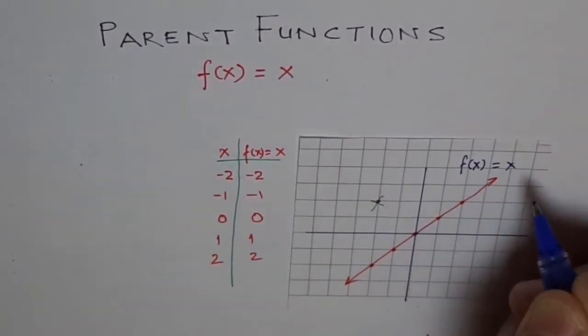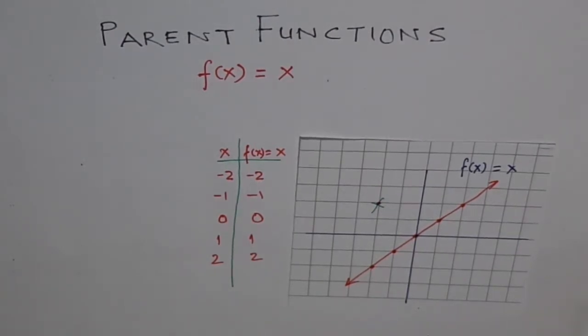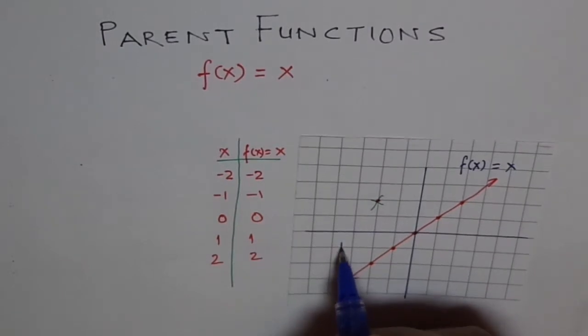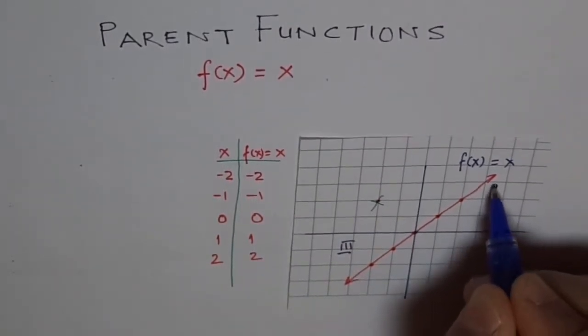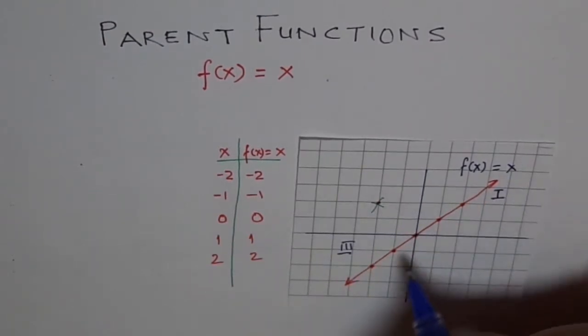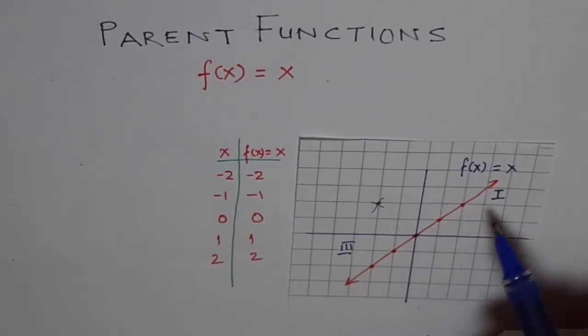f(x) equals to x as a function. Now let's look into the characteristics of this line. As you can see it never bends. And it divides the quadrant 3 and quadrant 1. In fact it divides the coordinate plane into two equal halves diagonally. It moves from quadrant 3 to quadrant 1.